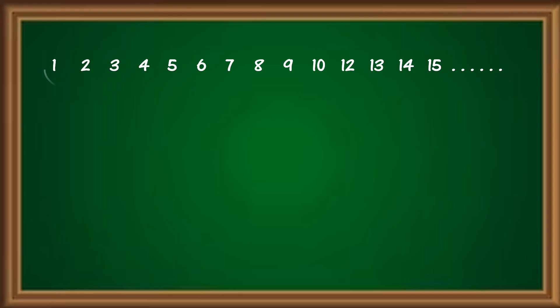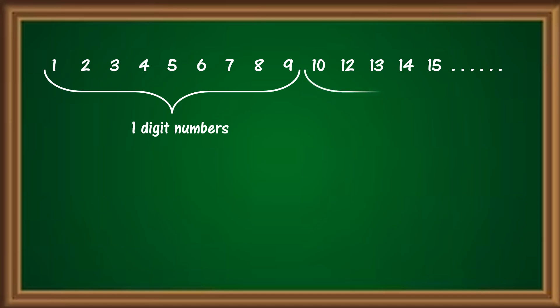So, when we start counting or writing numbers from 1, the numbers 1 to 9 have 1 digit — that is, they are 1-digit numbers. And from 10 onwards, they have 2 digits, which makes them 2-digit numbers.